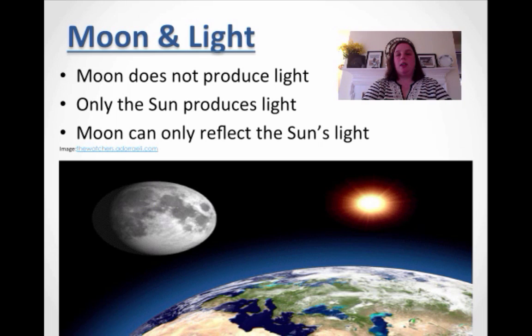So let's talk about the moon and light. And I find this is a big misconception with my students. The moon doesn't produce its own light. The only thing that produces light in our solar system is the sun. So the moon can only reflect the sun's light, and it totally has to do with its position relative to each other.